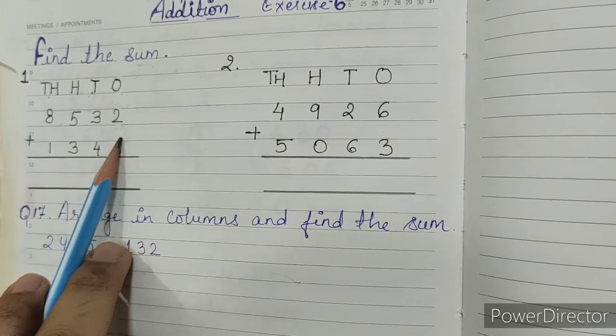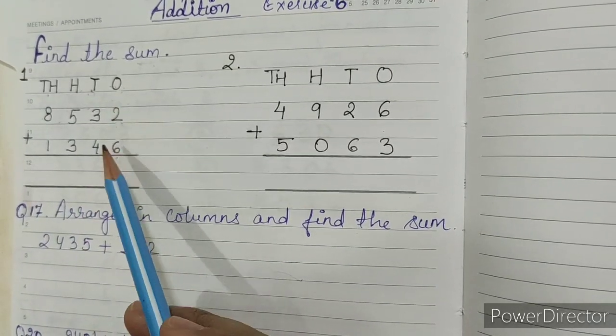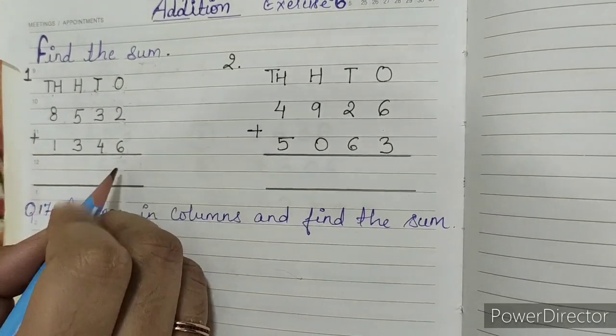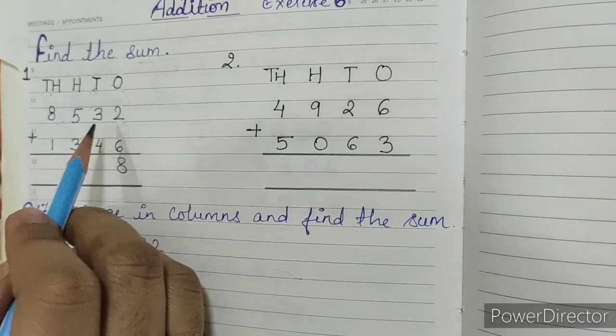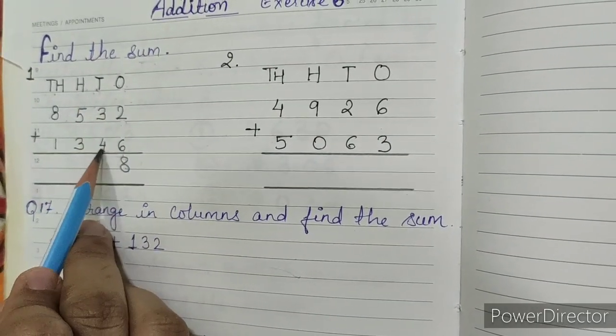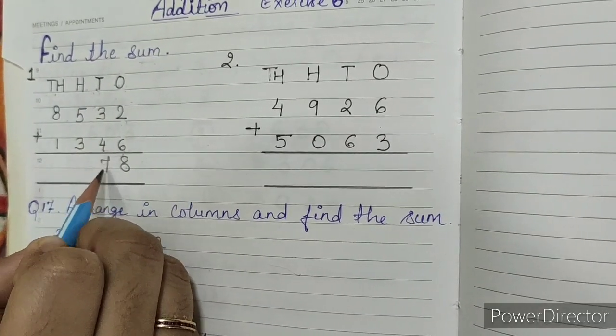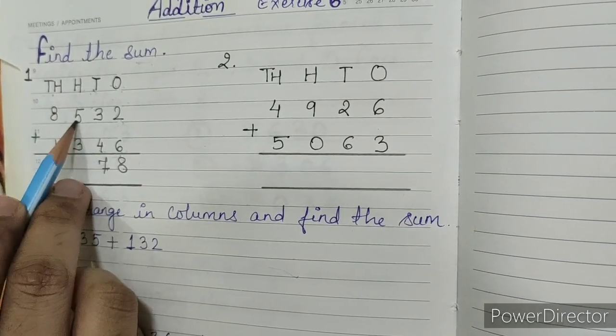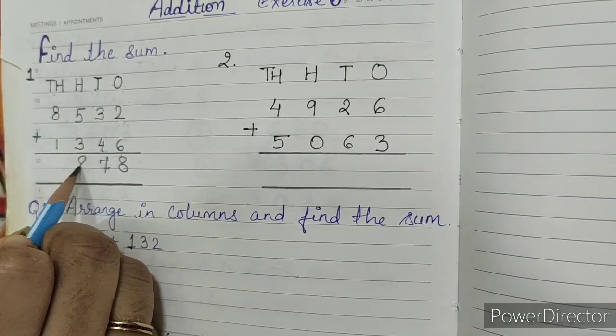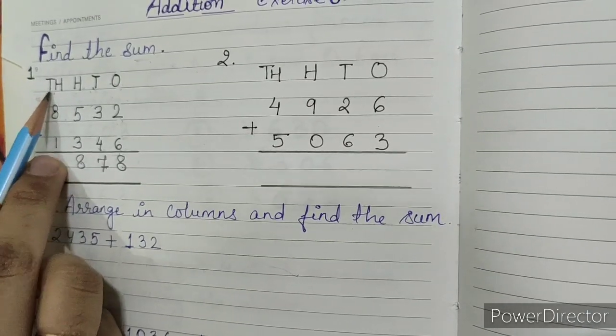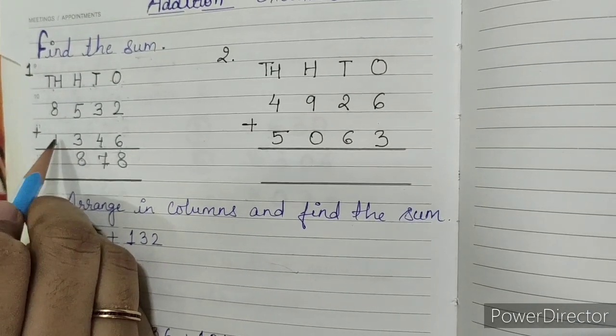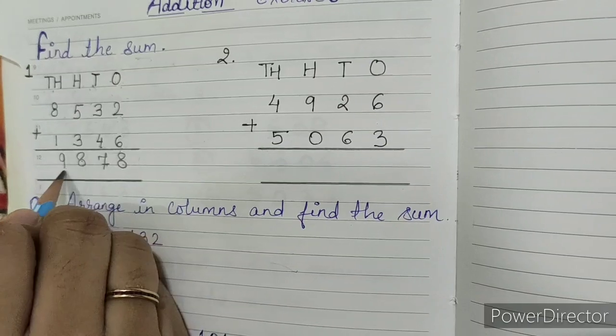Now we have to add the numbers. In the ones place, 2 plus 6 is 8. In the tens place, 3 plus 4 is 7. In the hundreds place, 5 plus 3 is 8. In the thousands place, 8 plus 1 is 9. So this is our answer.